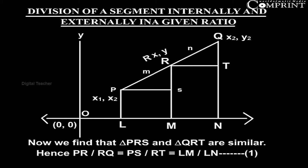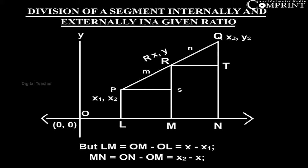Hence PR/RQ = PS/RT = LM/MN (equation 1). But LM = OM - OL = x - x₁, and MN = ON - OM = x₂ - x.